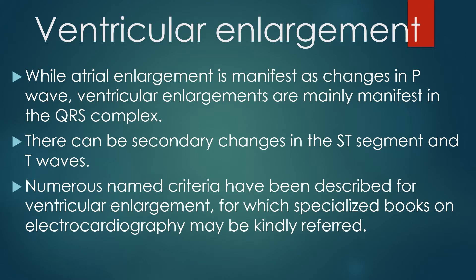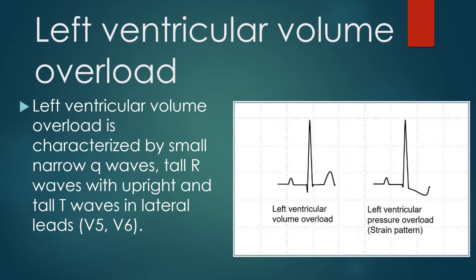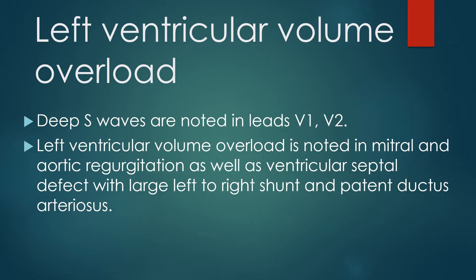While atrial enlargement manifests as changes in the P wave, ventricular enlargements are mainly manifest in the QRS complex, with secondary changes possible in the ST segment and T waves. Left ventricular hypertrophy is divided into volume overload and pressure overload; similarly, right ventricular hypertrophy is divided into pressure and volume overload. Left ventricular volume overload is characterized by small narrow Q waves, tall R waves with upright tall T waves in lateral leads (V5 and V6), and deep S waves in V1 and V2.